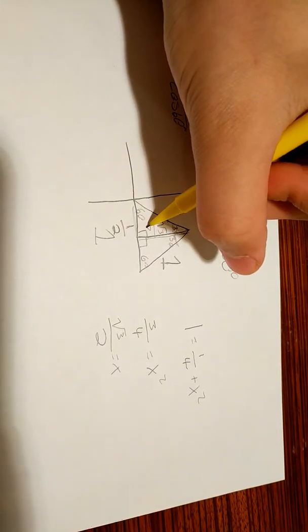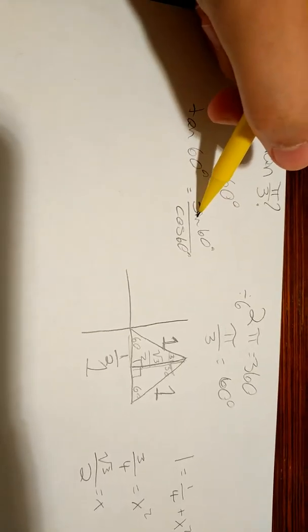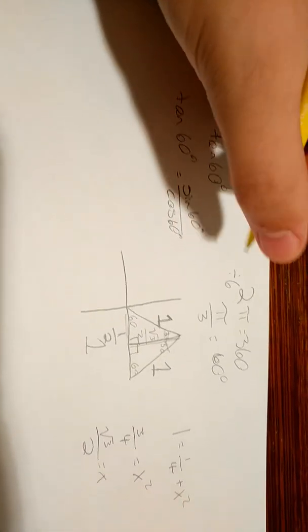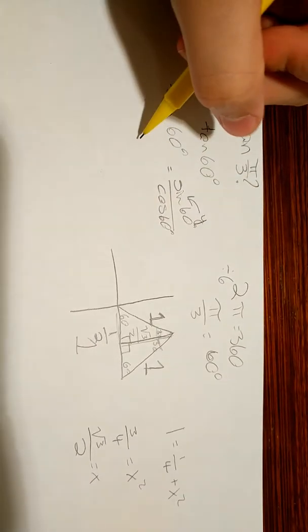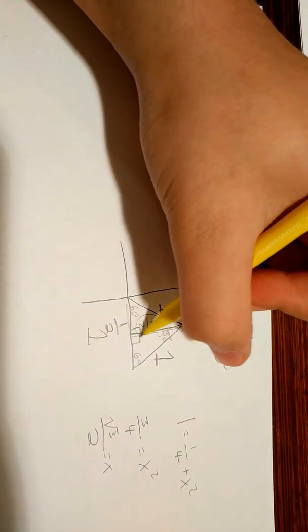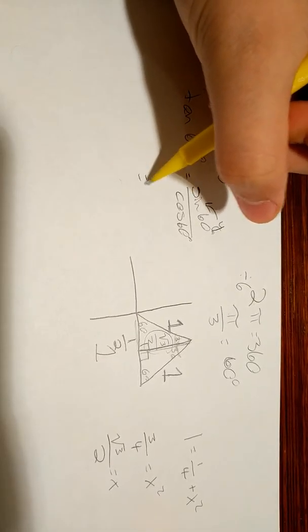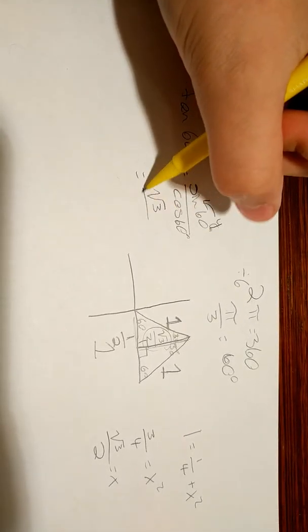So, this right here is the square root of 3 over 2. So now, the sine of 60 degrees, remember sine is, on a unit circle, it's just the y. So, that's going to be this number right over here. It's going to be the square root of 3 over 2.